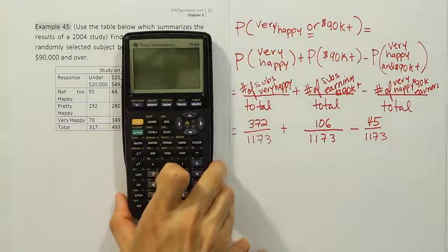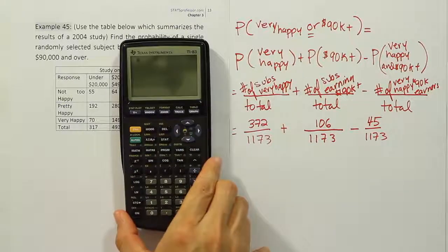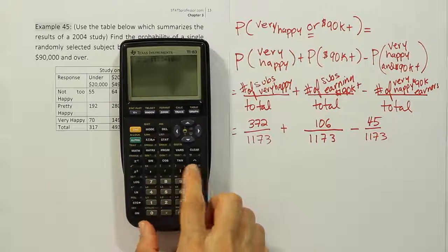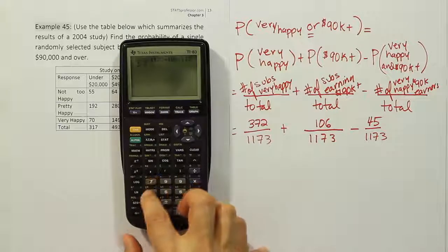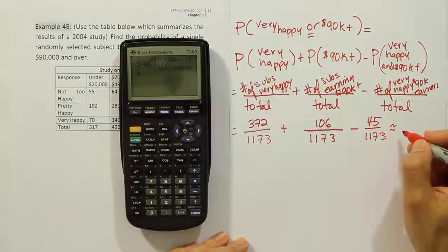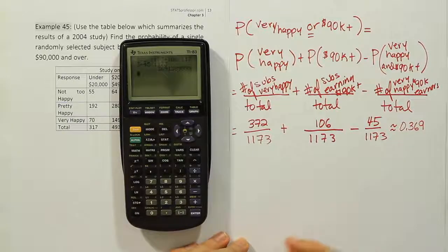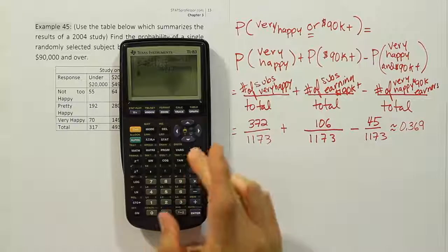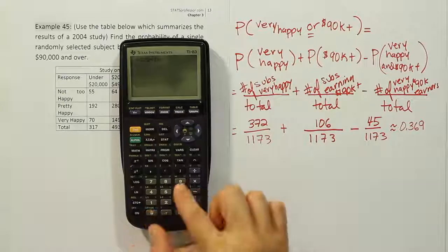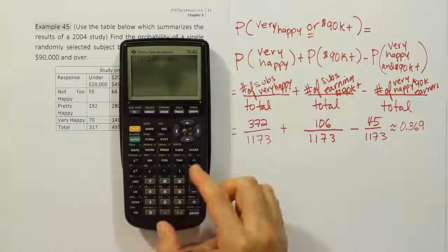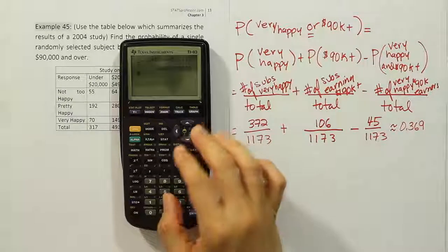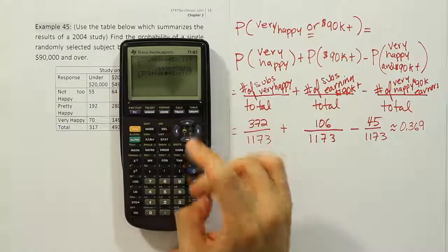Putting it all together: 372 divided by 1173, plus 106 divided by 1173, minus 45 divided by 1173. You can also combine the numerators since they share the same denominator: (372 + 106 − 45) divided by 1173. I made a quick typo entering plus 45 instead of minus 45 — correcting that, you get a decimal answer of approximately 0.369.